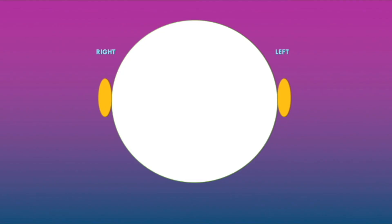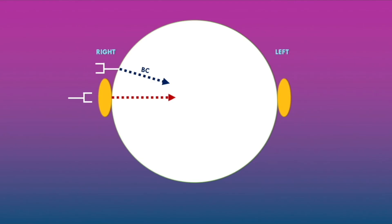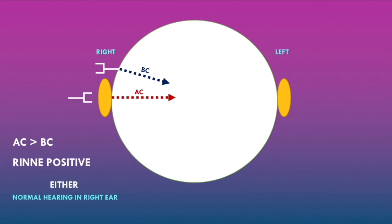Returning to the schematic diagram for the Rinne test: when the vibrating tuning fork is placed on the mastoid bone behind the right ear, sound travels by bone conduction. When placed over the right ear, sound travels by air conduction. If the sound is loudest over the ear, this indicates air conduction is greater than bone conduction — a Rinne positive test — indicating either normal hearing or sensorineural hearing loss in the right ear.